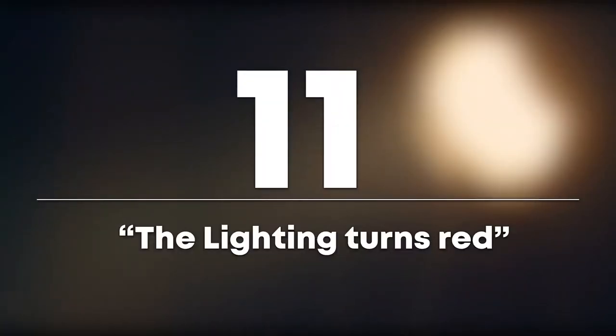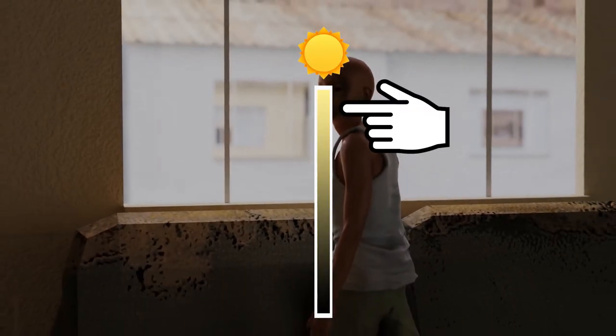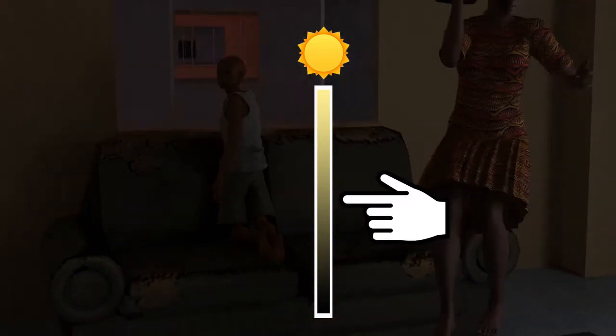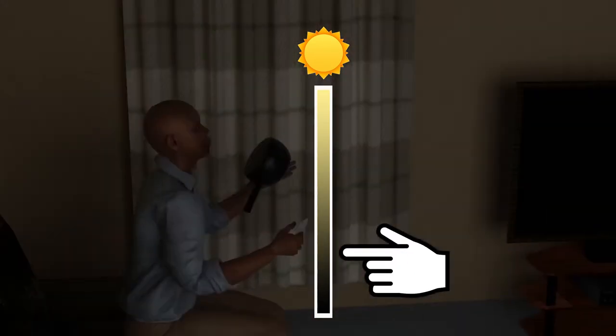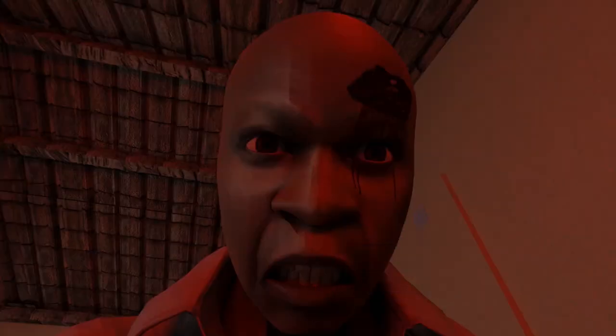Number 11: The lighting turns red. The overall scene lighting gets dimmer and a red filter is applied, symbolizing the blood that is shed in these unseen domestic fights.